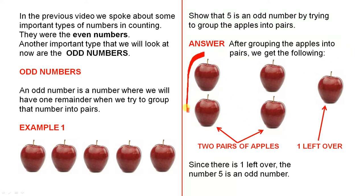Right, here is one pair that contains two apples. Here is another pair with another two apples. So we have two pairs of apples but look at this. There's one poor apple which is left over. Since there is one left over, the number 5 is an odd number.